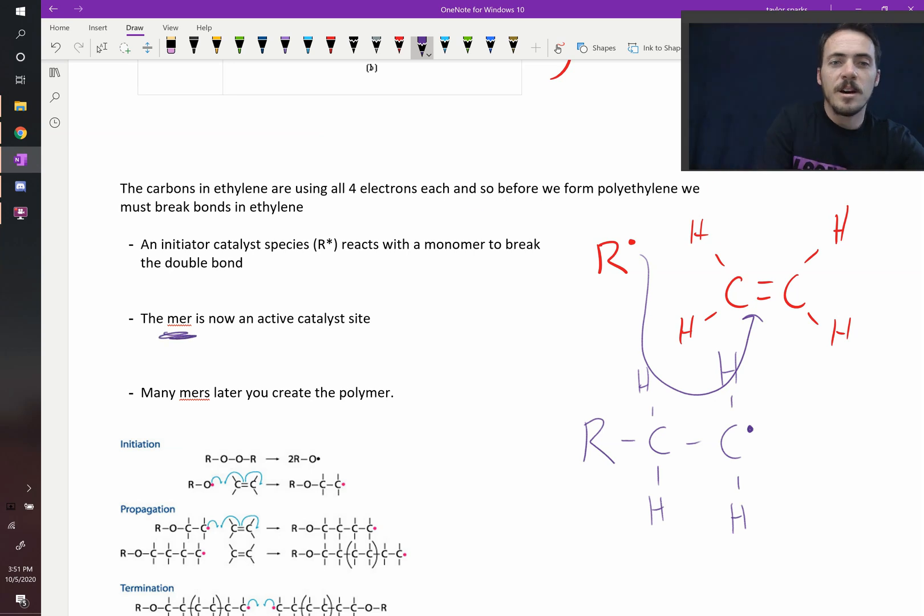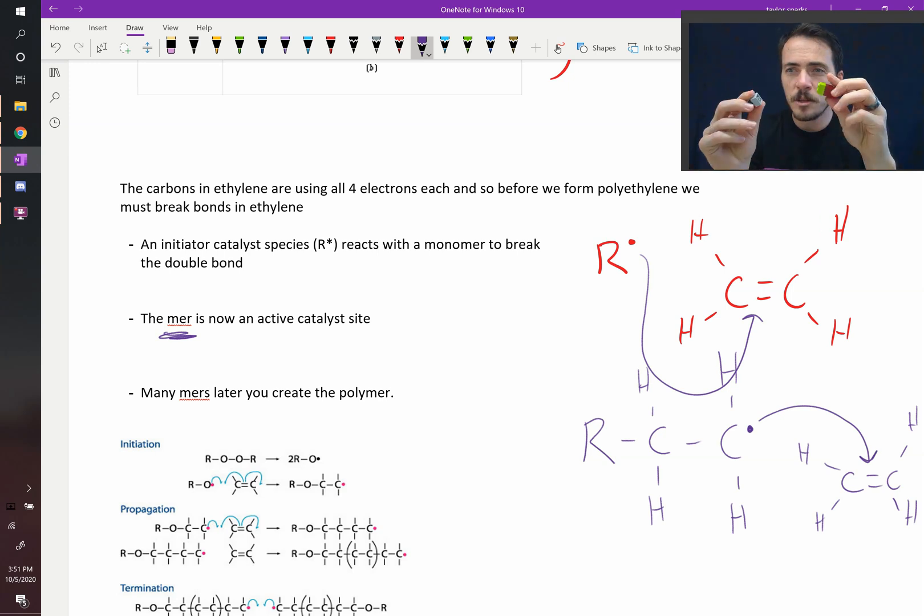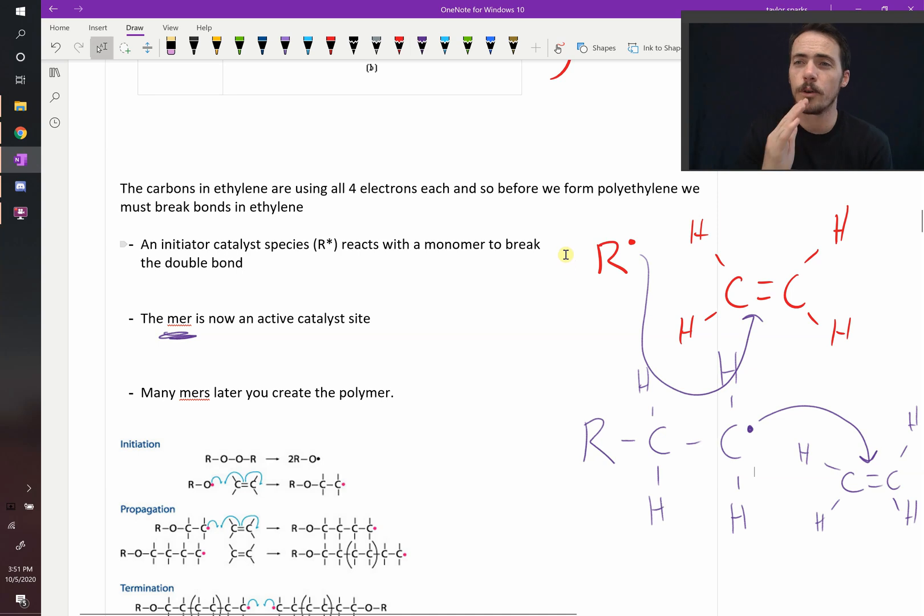The mer becomes an active catalyst site. This thing is ready to go out and attack some other monomer. Some other ethylene monomer is over here. And that electron is going to want to attack that double bond. And so it's going to increase. It's going to keep on growing. It's just like adding Legos. Piece by piece, you have something that wants to form and react. So it's going to find another one. It's going to attack it and add it. And now this wants to attack and find something else that it can react to. So it'll find another monomer. And it's going to attach to that. And it'll just keep on growing. In this case, it would all be the same monomer over and over and over.